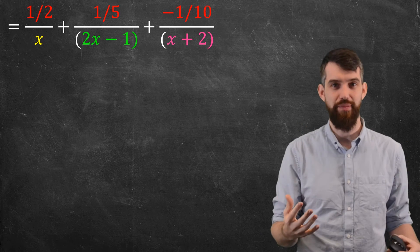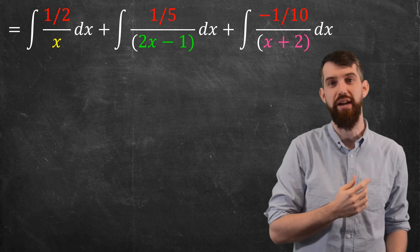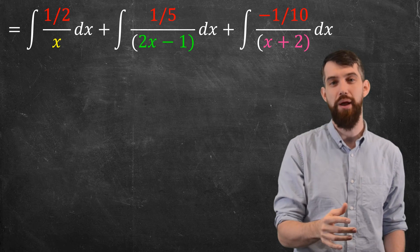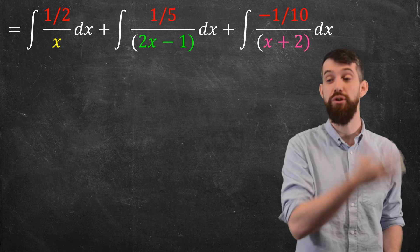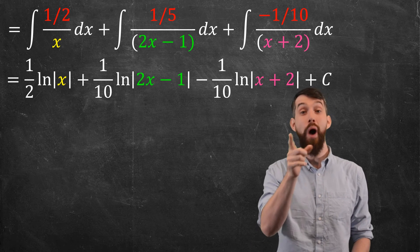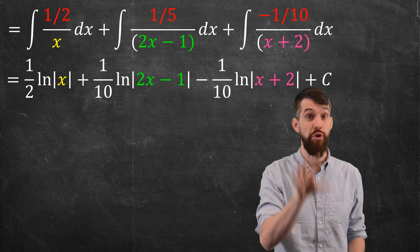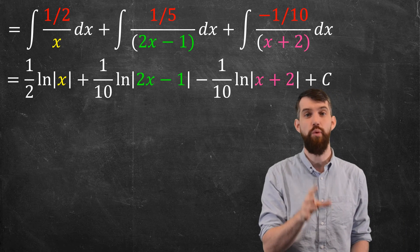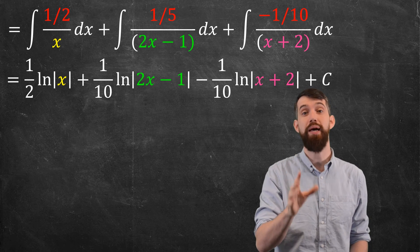So what do I want to do? I want to go and replace this with something that I am integrating. I am integrating the one-half over x. I am integrating the one-fifth over 2x minus 1, and so on. Each of these is going to be a logarithm, a logarithm with a different u substitution. So what do I get? One-half logarithm of x, then I get one-tenth, the one-fifth, and then there's another one-half that comes when I do my u substitution with u equal to 2x minus 1. So one-tenth, this logarithm of 2x minus 1 in absolute values, and then minus the one-tenth logarithm of x plus 2, all plus c.